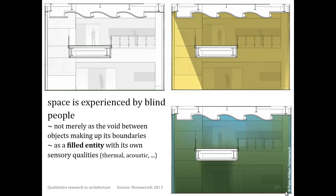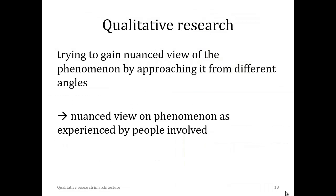In summary, adopting a qualitative research approach in architecture allows you to gain a nuanced understanding of a complex phenomenon, such as blind people's spatial experience, by approaching it from different angles. This results in a nuanced view on the phenomenon as experienced by the people involved — in this case, blind people themselves.